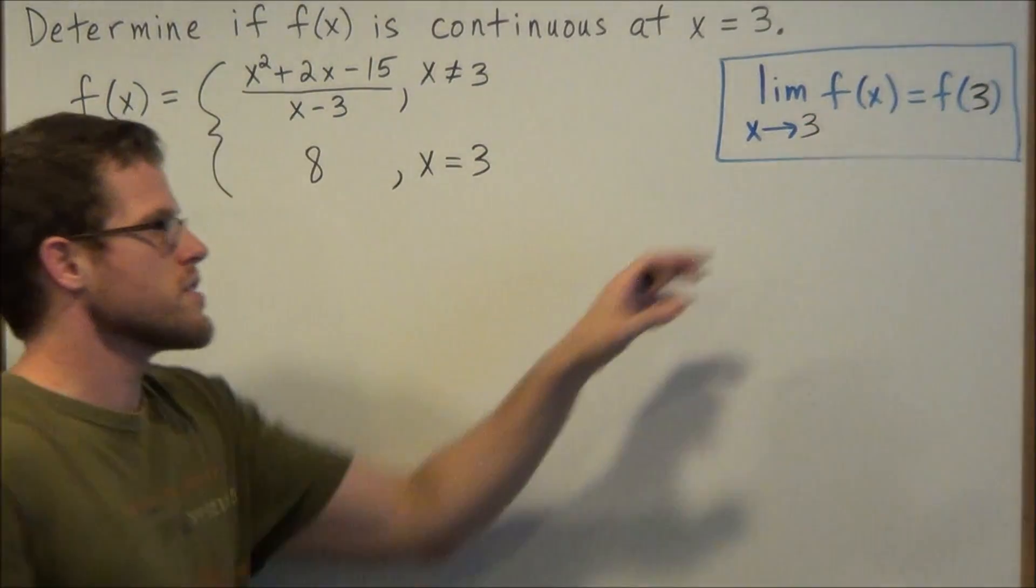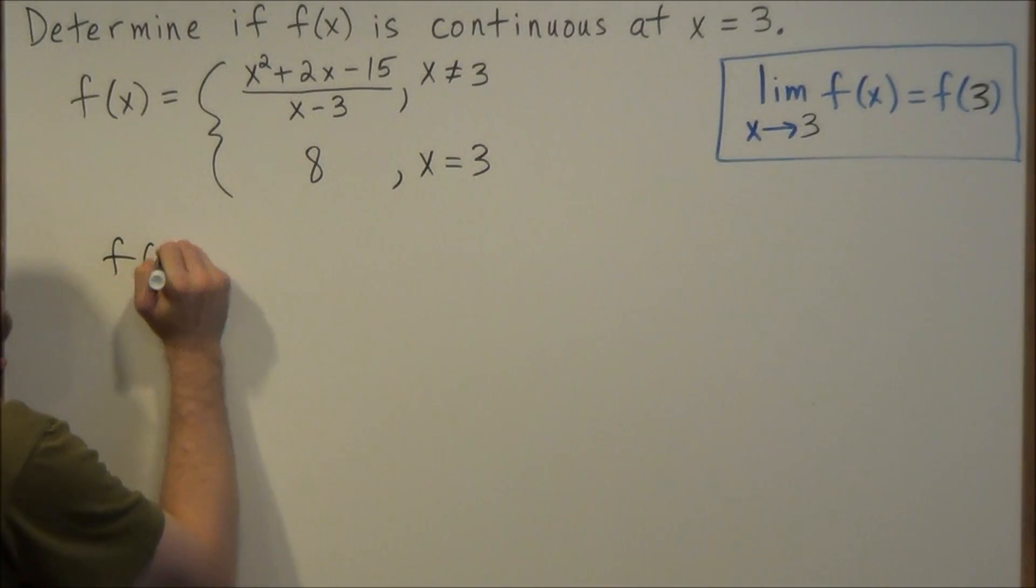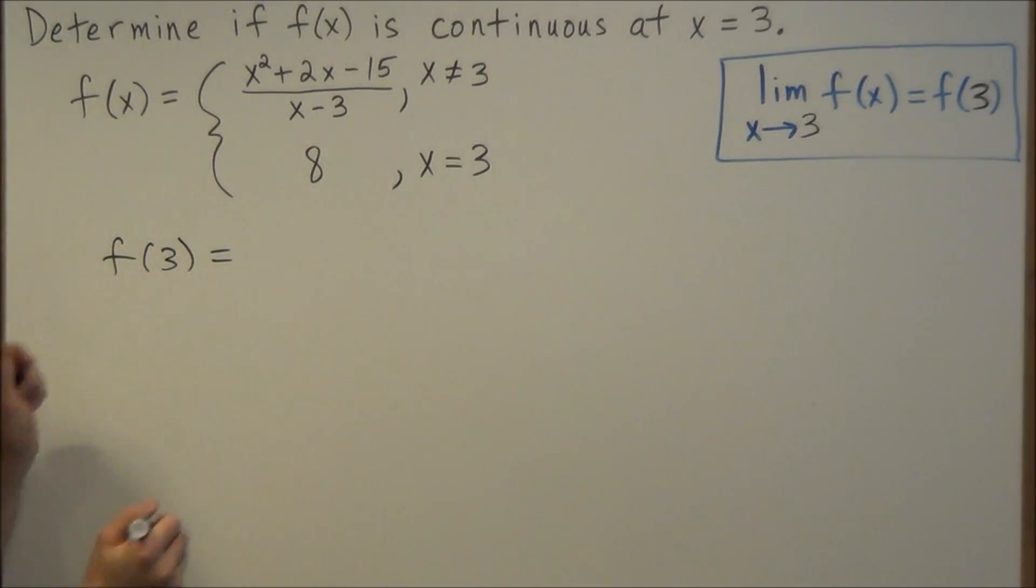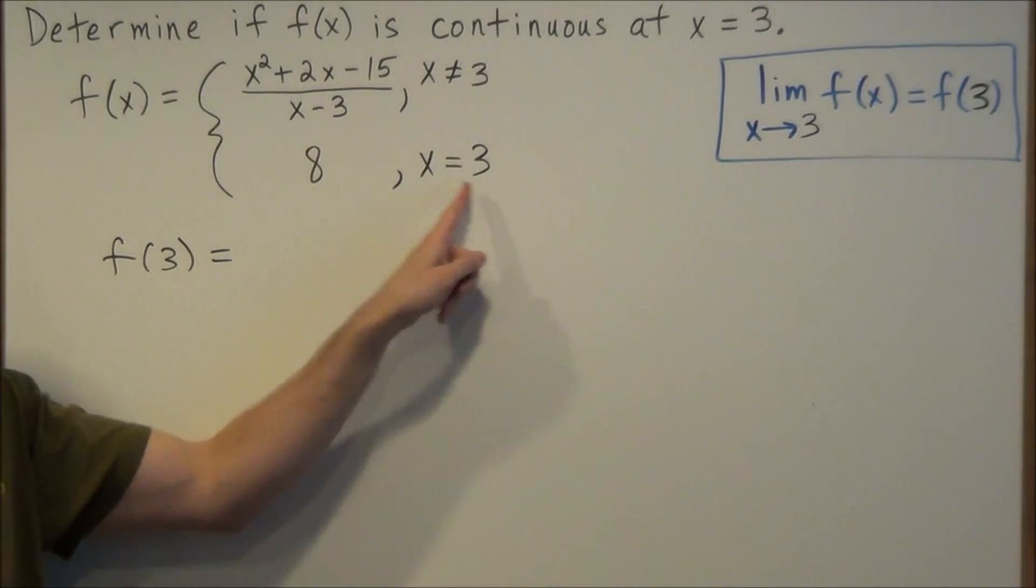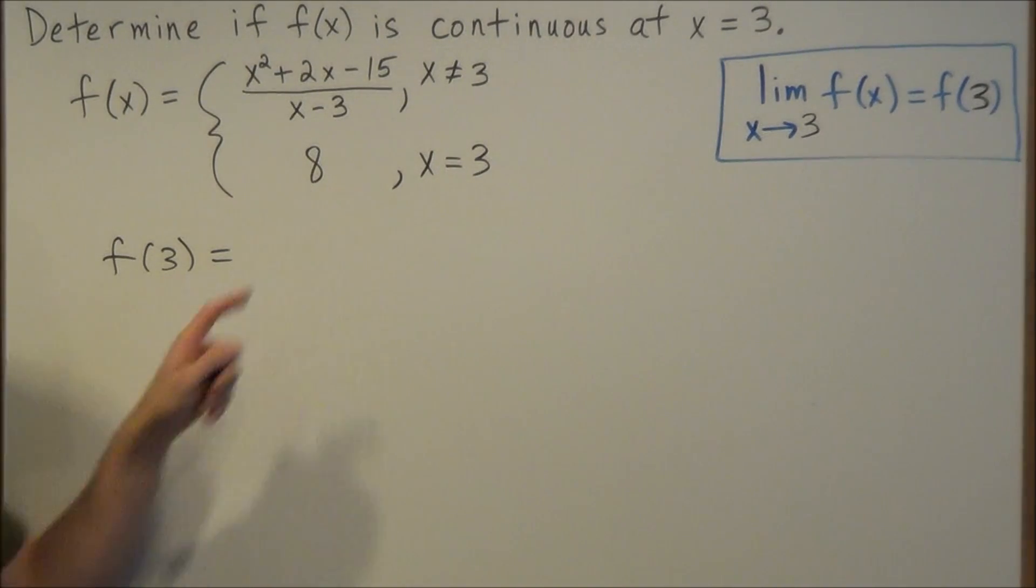Okay, so the first thing we could find is the function value of 3, and that we get directly from the function itself. When x is equal to 3, the function value is equal to 8.